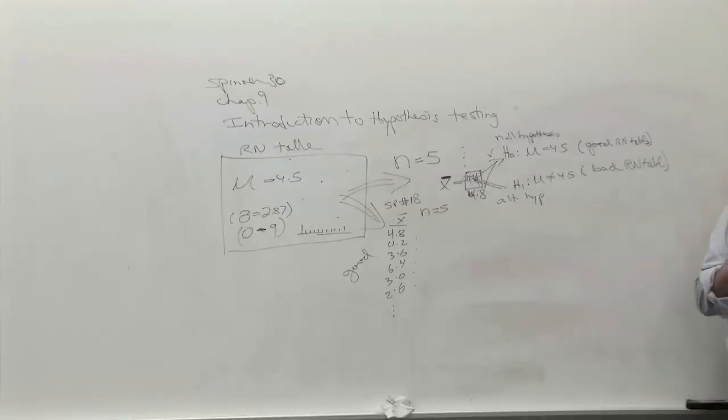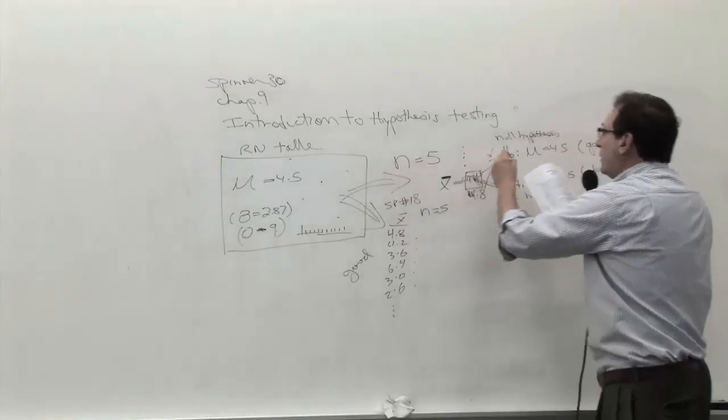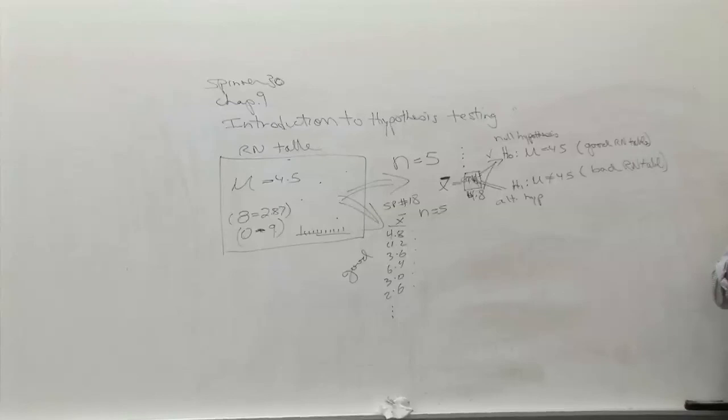Well, we have a million. We took a sample of five numbers. We got 4.8. Now we've got to make a decision. Is that evidence that the table is a good table, where you would expect ideally a number of about 4.5? But you don't really expect 4.5. You expect 4.5 plus or minus a little bit of error.